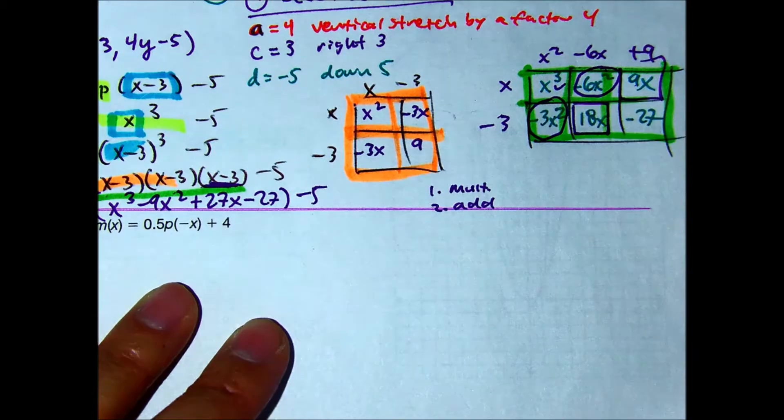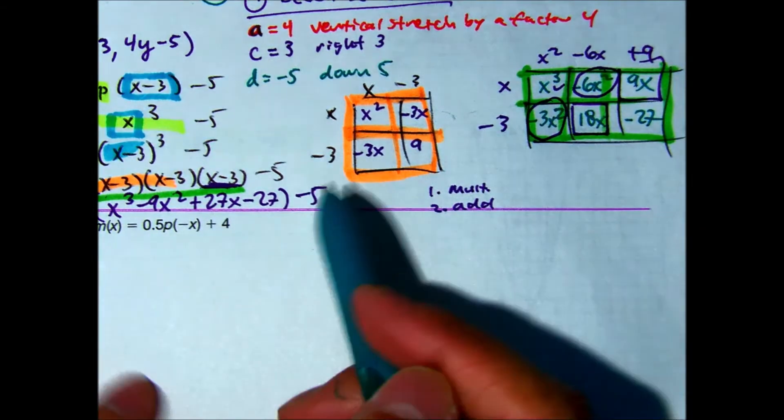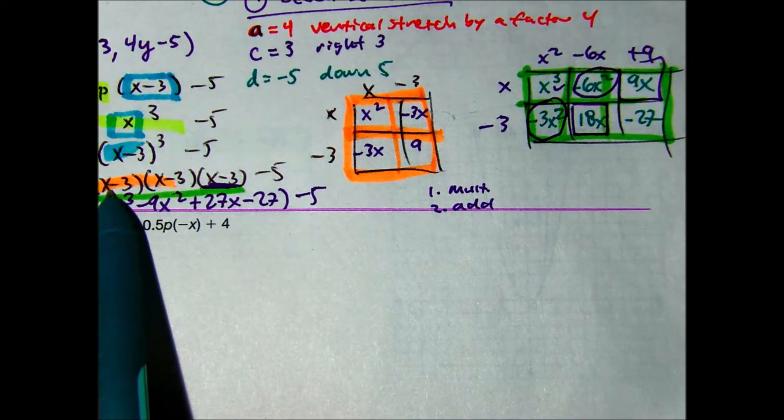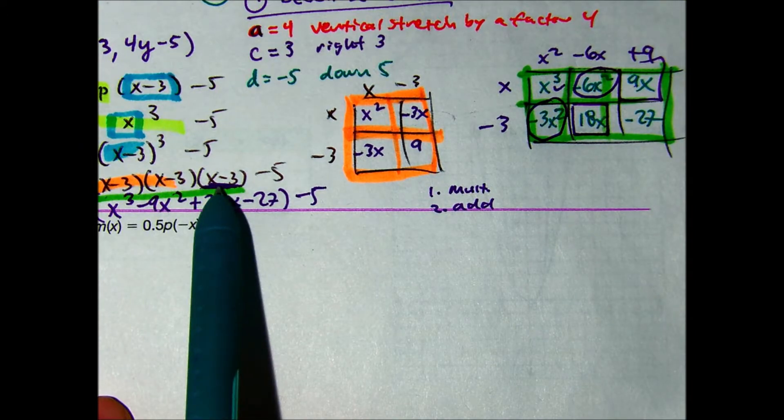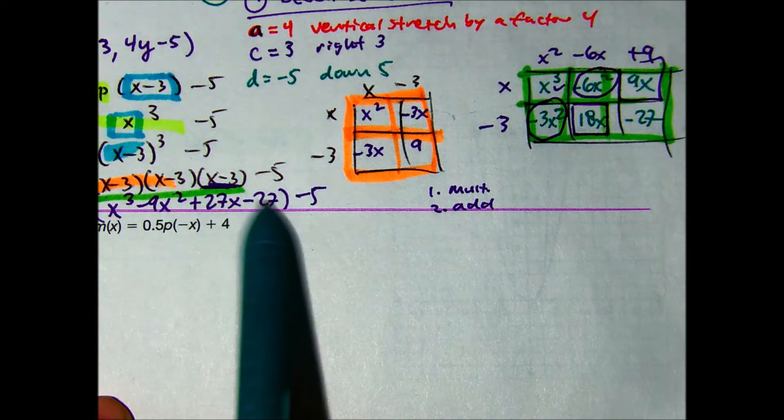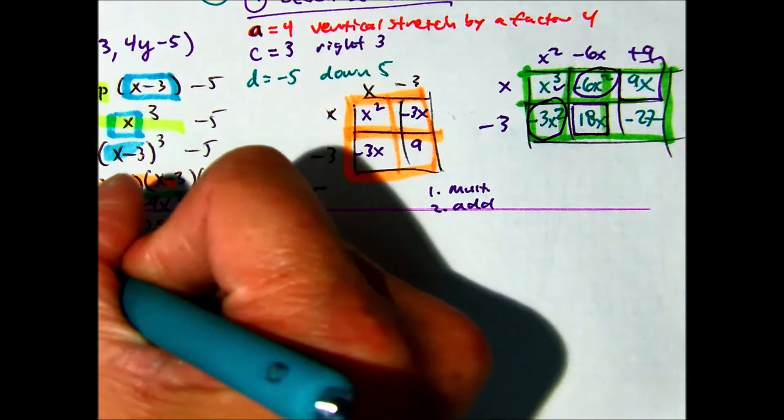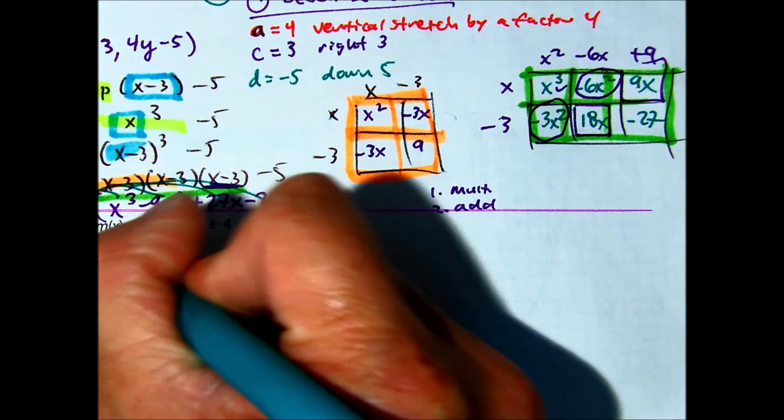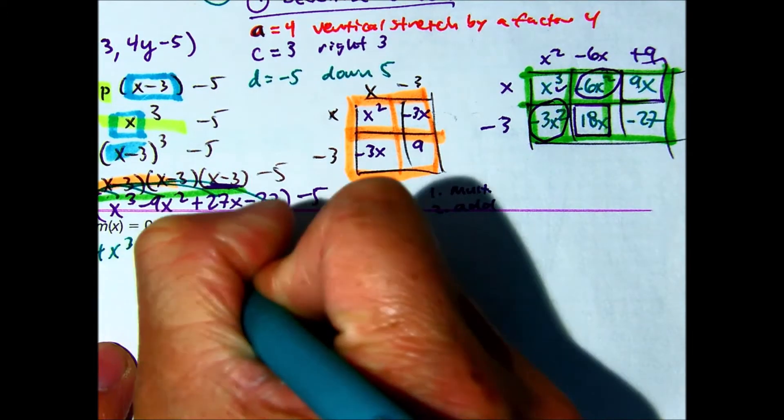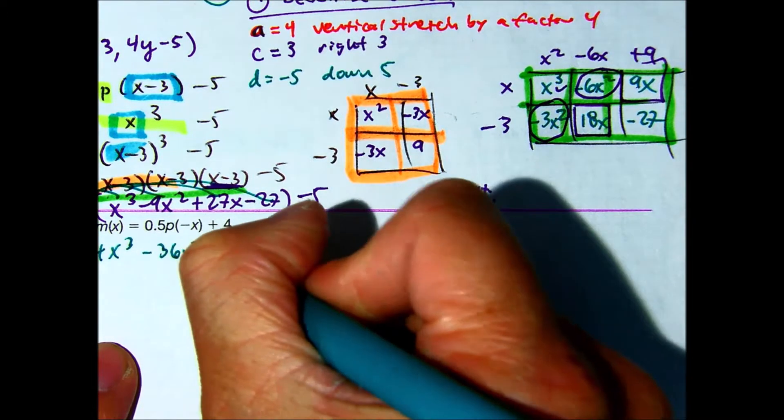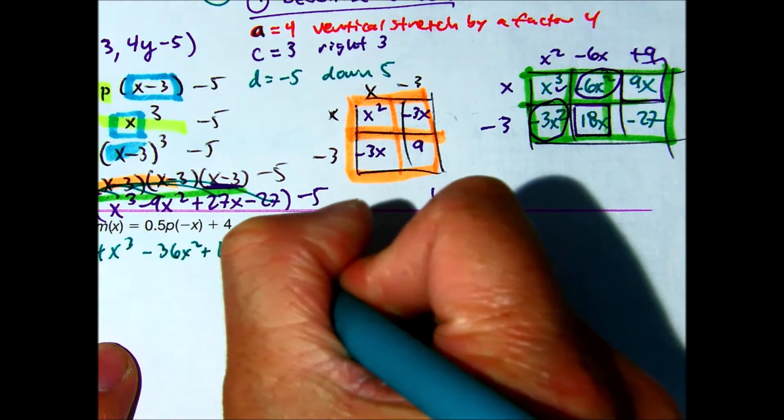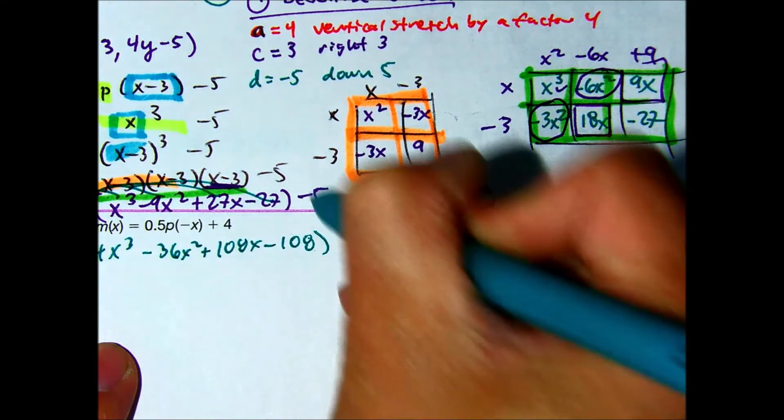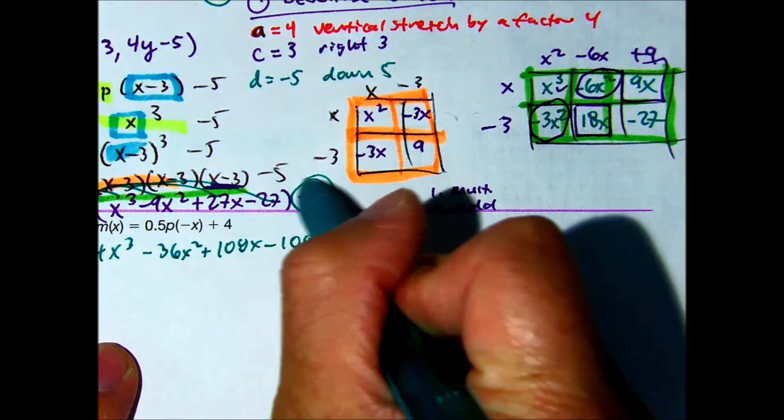Okay. We're not done with the problem yet. Almost there. They're telling us, we just expanded x minus 3 times x minus 3 times x minus 3. Now I'm going to multiply by 4 in all of these. So I'm basically distributing to each one of those.